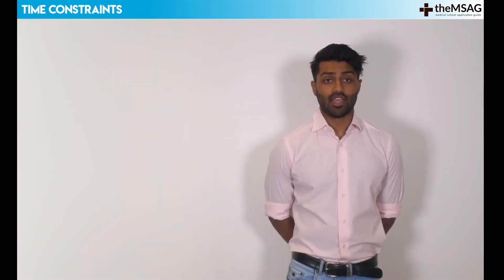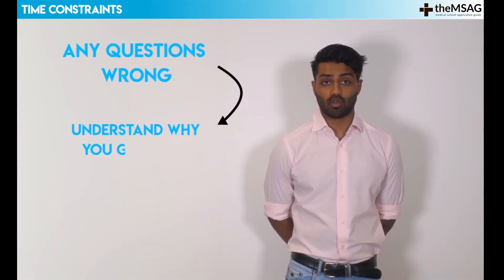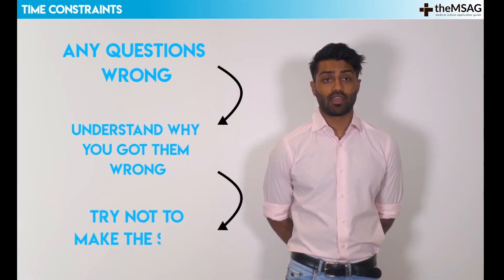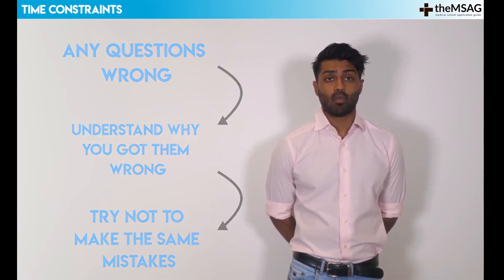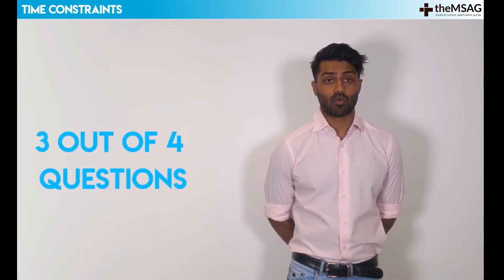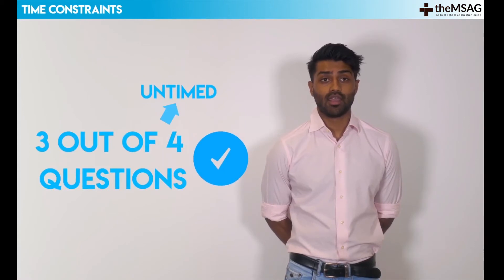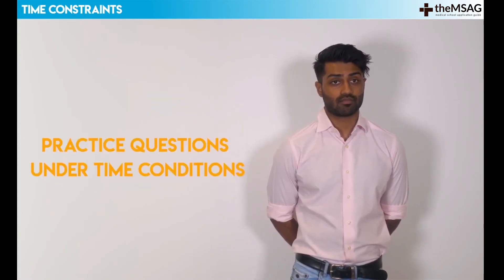But don't make a habit of this. If you get any questions wrong, you should make sure you understand why you got them wrong and try not to make the same mistakes next time. Once you've got the general idea of this section and are getting at least three out of four of the questions per passage right, untimed, it is time to move on to practicing questions solely under timed conditions.